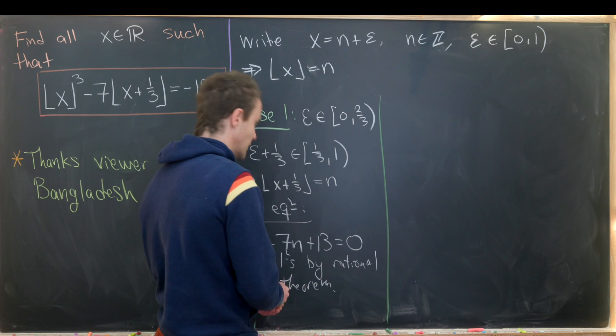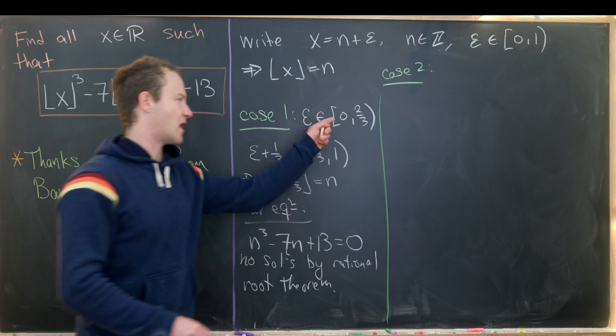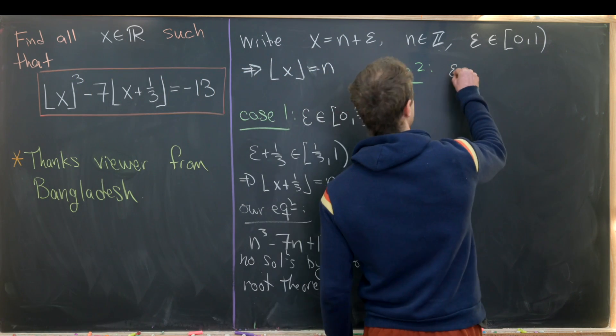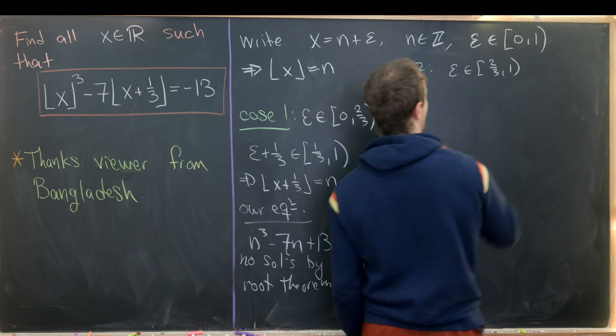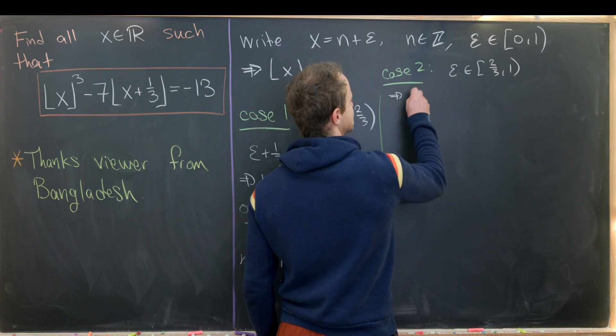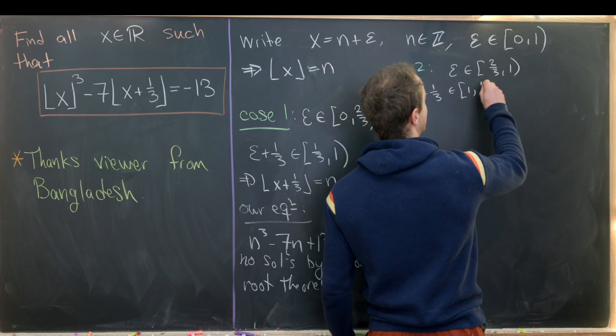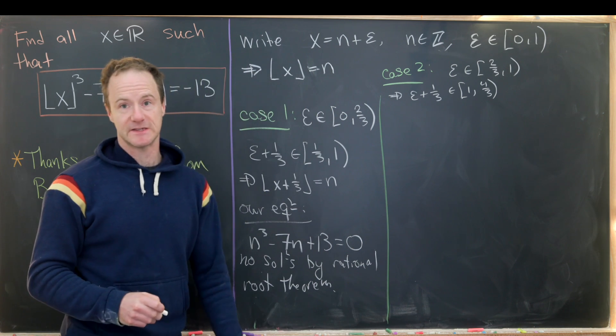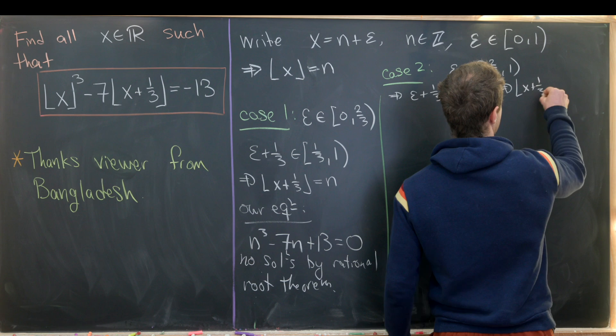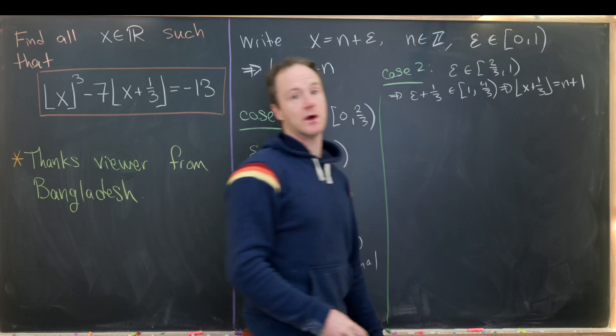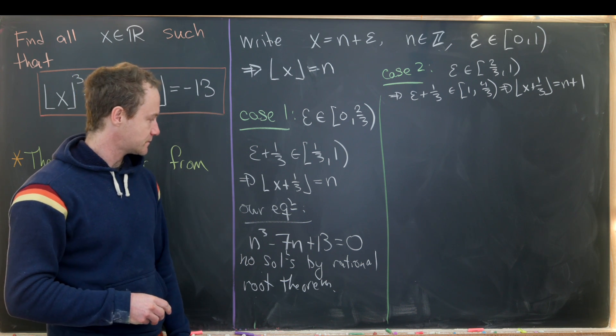So now let's move on to our second case. So our second case will be the complement of this case. And that's going to be if epsilon is on the interval two-thirds to 1. But let's notice that means that epsilon plus one-third will be on the interval 1 to four-thirds. But in this case, we see that the floor of x plus one-third will be equal to n plus 1. So it scales past the level where we get a larger value for this floor function.